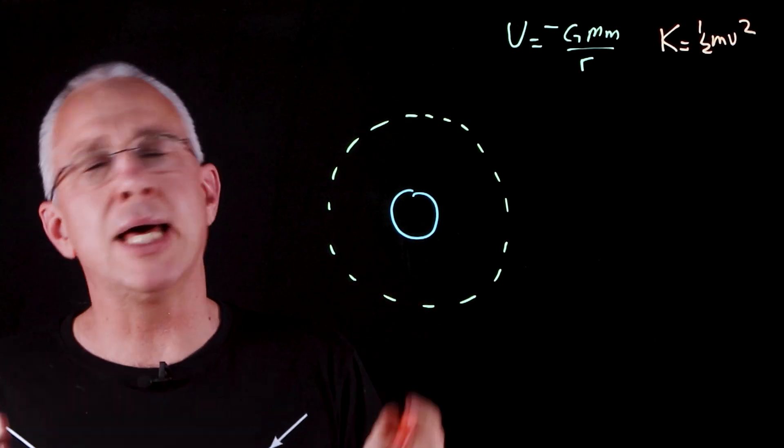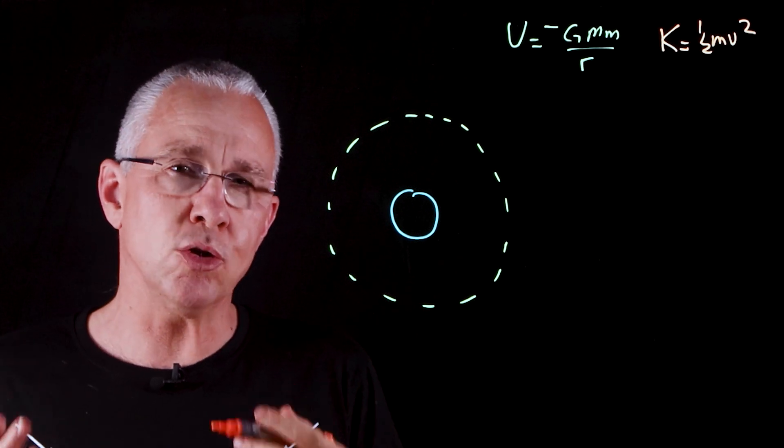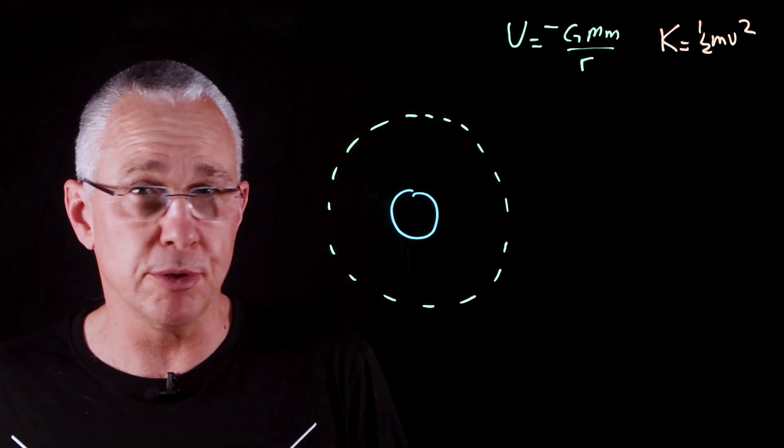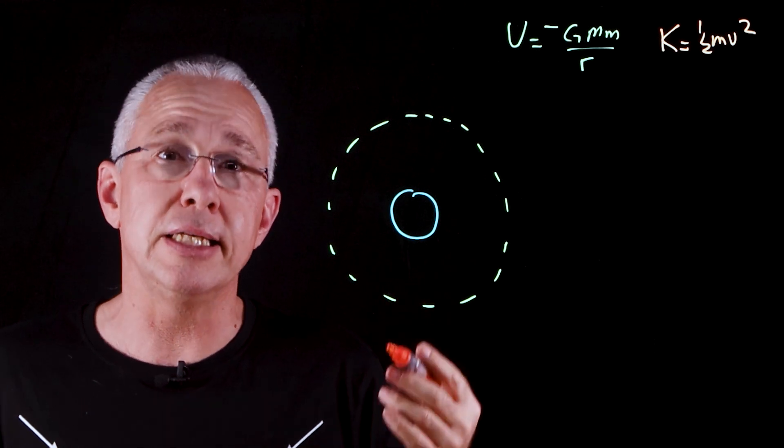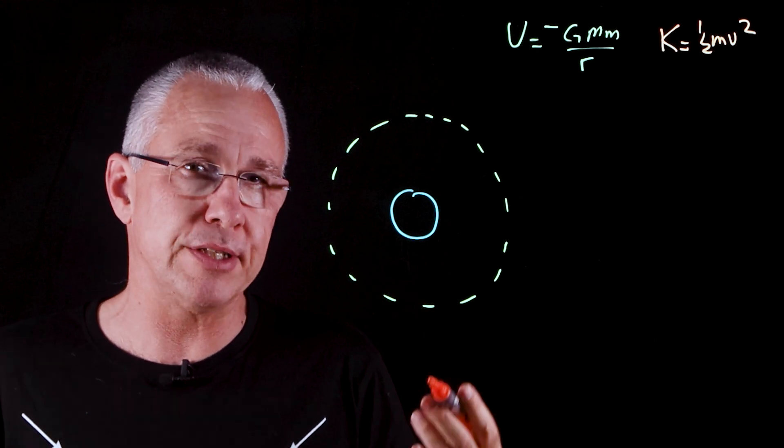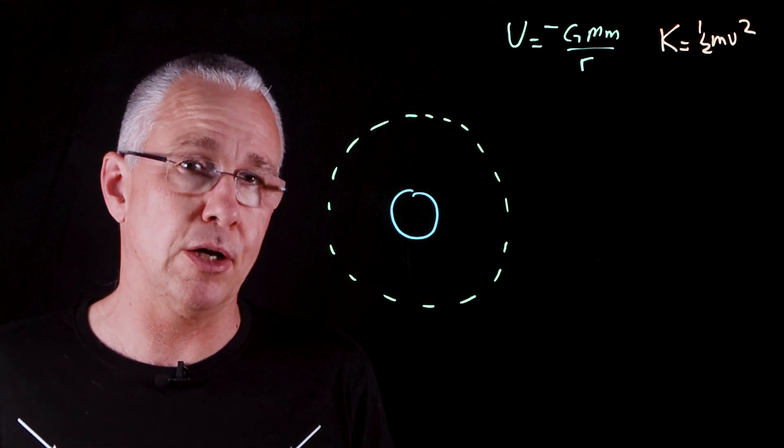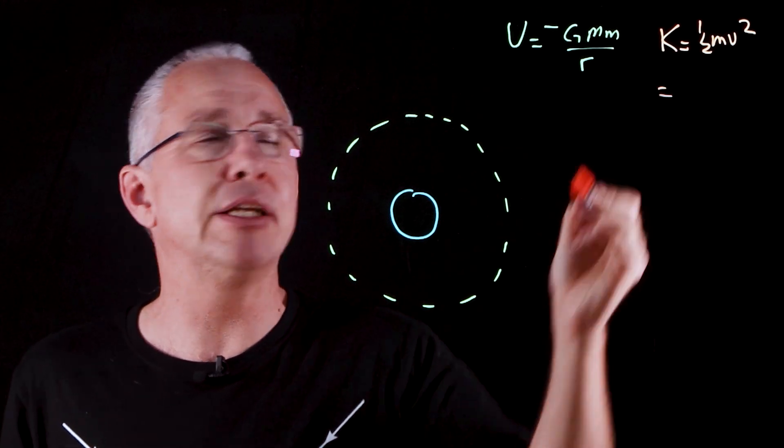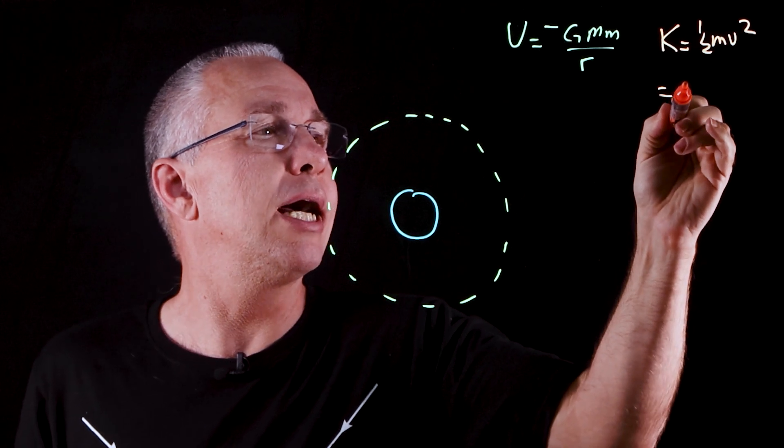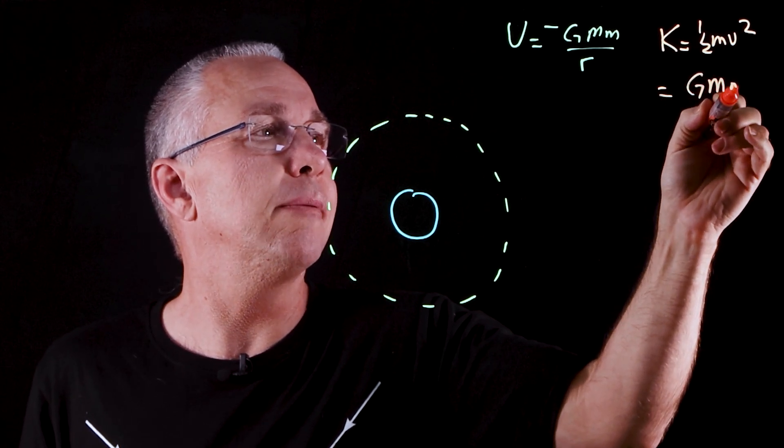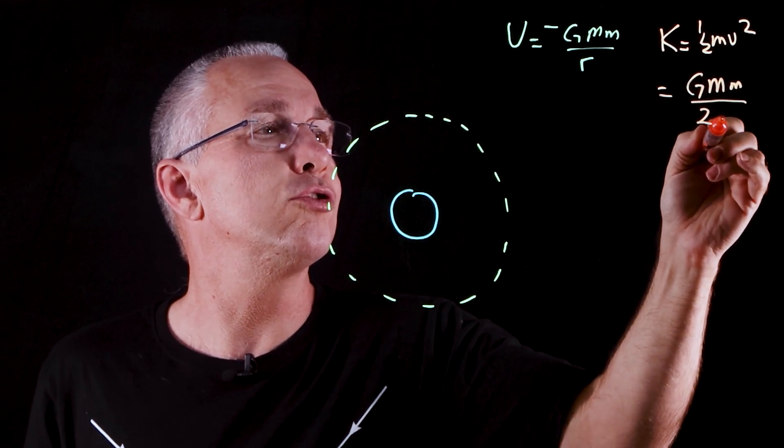But we can replace the v squared because the orbital velocity, which is determined by the understanding of centripetal force and the fact that it is also due to the gravitational force, you get a value for v squared as G m over r. And so now we can rewrite the kinetic energy formula as capital G m m over 2 r.